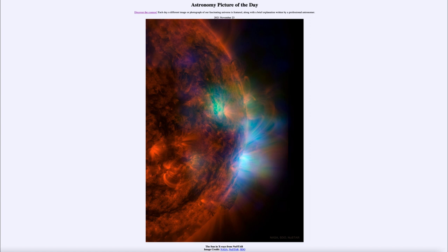It is titled 'The Sun in X-rays from NuSTAR.' So what do we see here? Here is a partial image of our sun — we can see a portion of it. This is looking at it in x-rays, which is part of the Nuclear Spectroscopic Telescope Array, which is in Earth orbit and looks very closely at the sun. The image includes x-ray emission as well as the sun in ultraviolet light. The base image is the sun in ultraviolet, but the blue and green is x-rays.